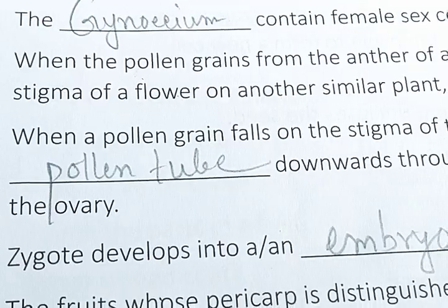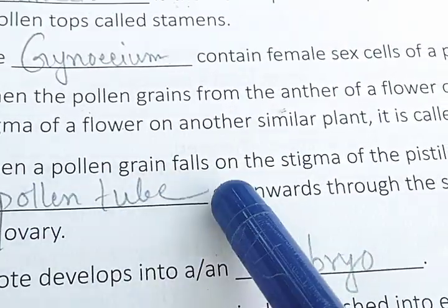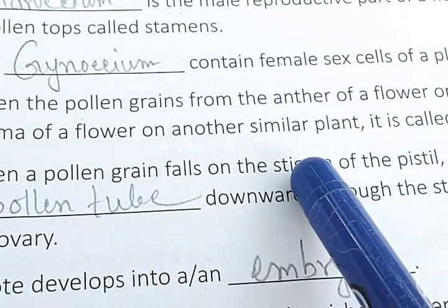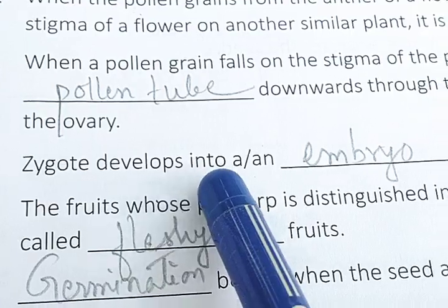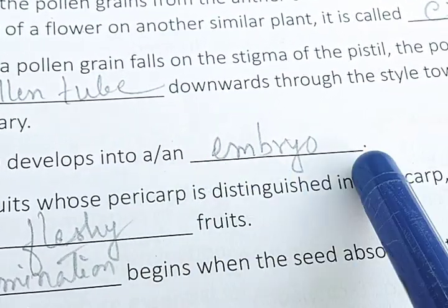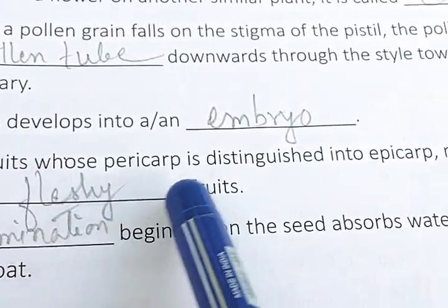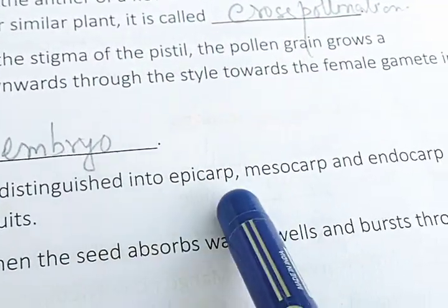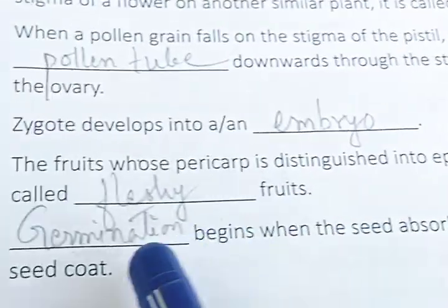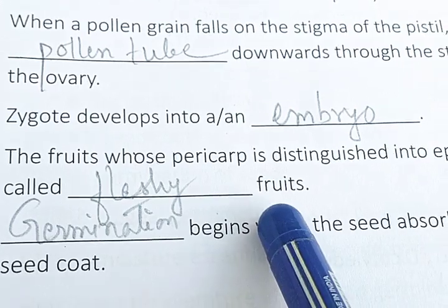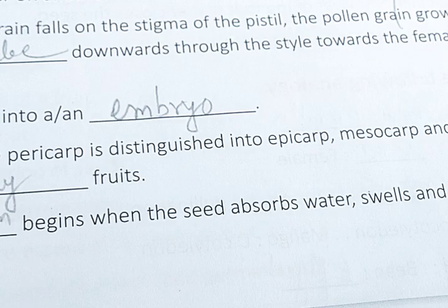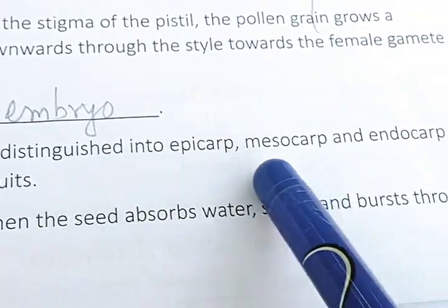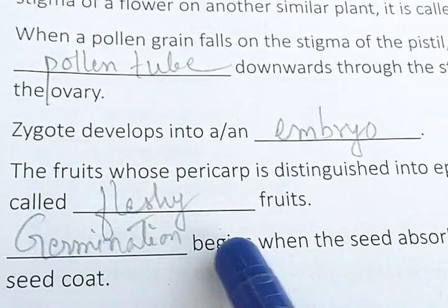I have already discussed the fertilization process. When pollen grains fall upon the stigma, they produce a pollen tube to enter the ovary, and the zygote develops into an embryo. The fruit whose pericarp is distinguished into epicarp, mesocarp, and endocarp is called a fleshy fruit — in fleshy fruits, the pericarp is individually distinguished into three layers: epicarp, mesocarp, and endocarp.